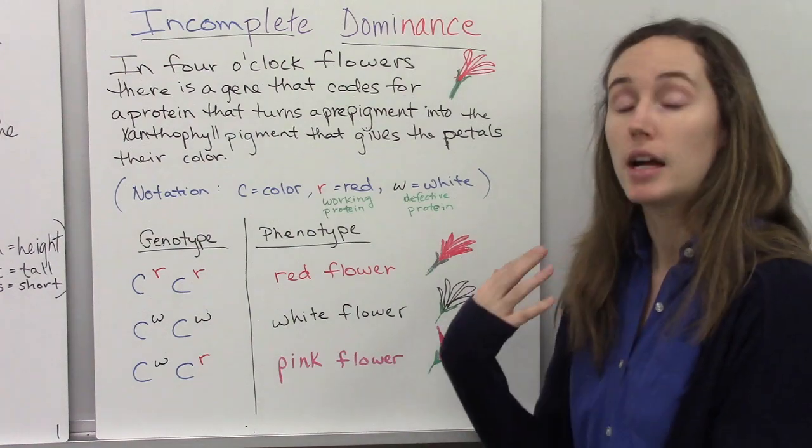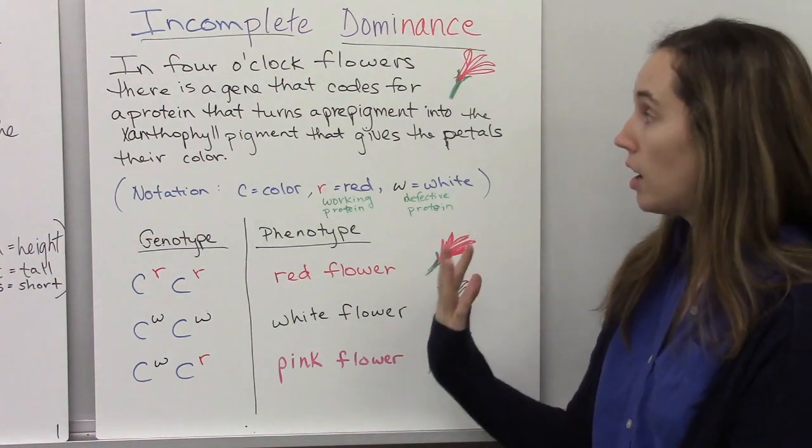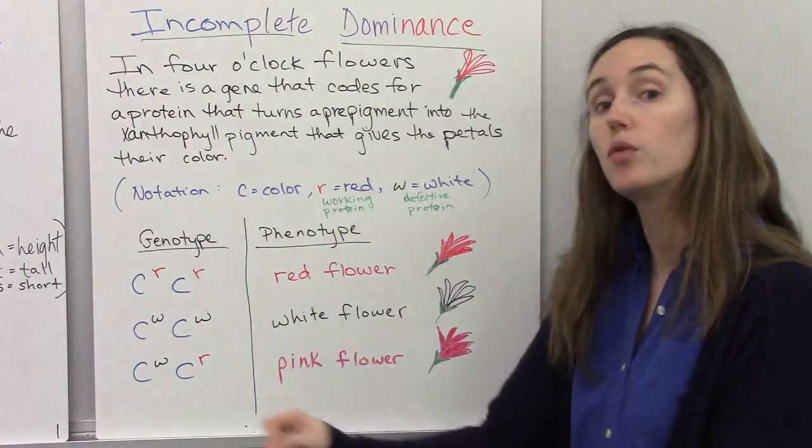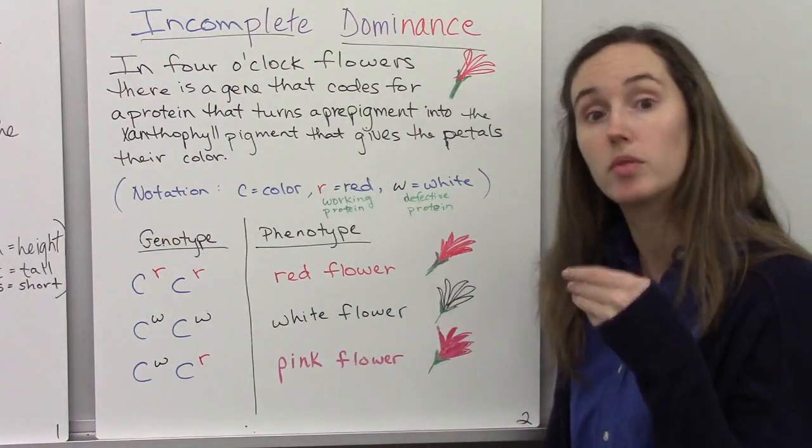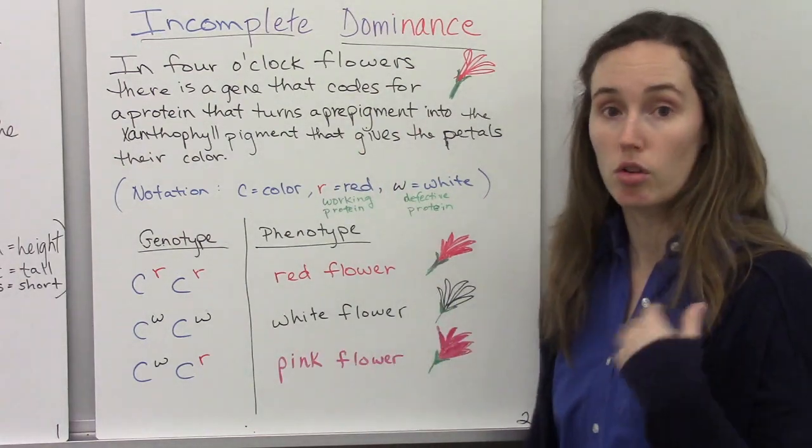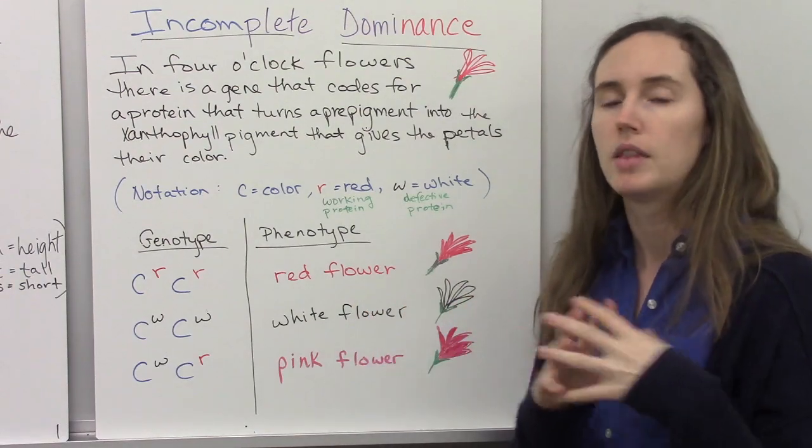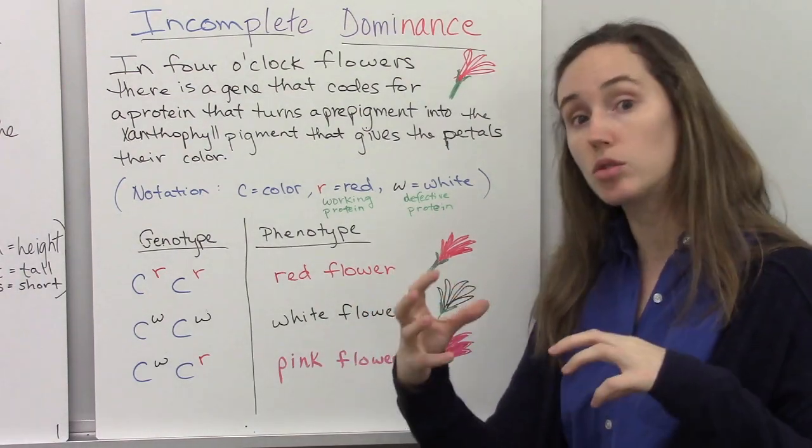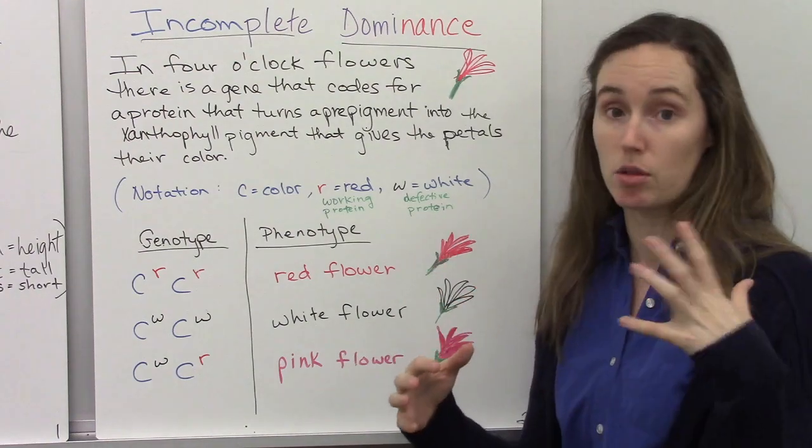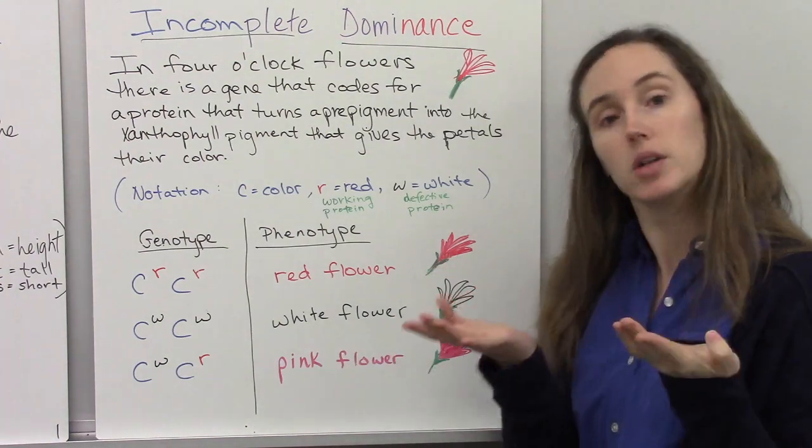But their flowers have a gene that codes for the production of a protein. Genes code for the production of proteins, and the job of this protein is to turn a pre-pigment - a pigment is a color molecule - to turn a pre-pigment into the pigment molecule xanthophyll, which gives the flower its color.